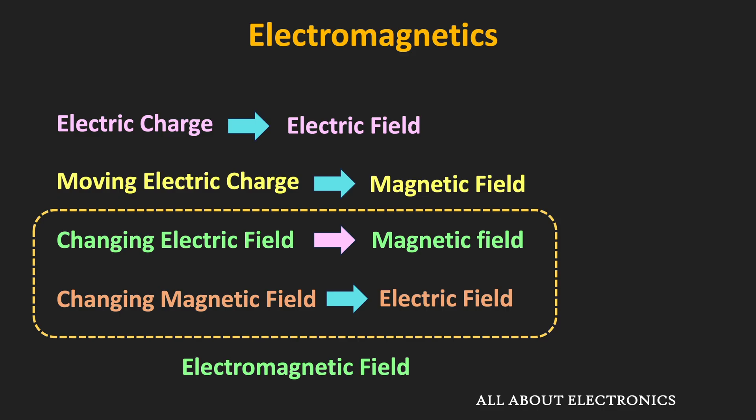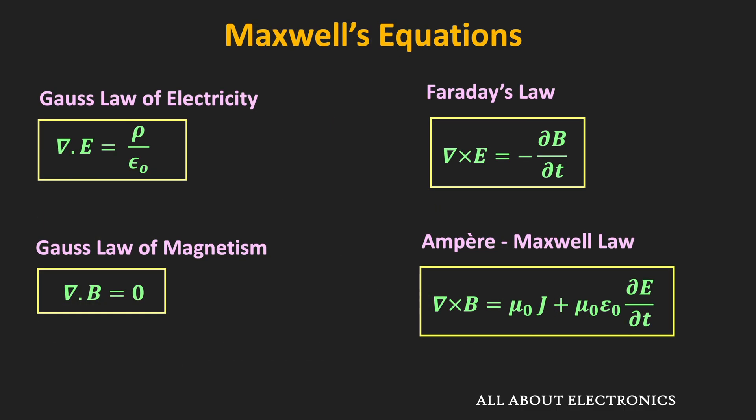This Electromagnetic field propagates through space like a wave. During the course, we will learn all of that. But all these phenomena can be best described by the four Maxwell equations. To understand them properly, we should have knowledge of these mathematical operators, or vector operators, beforehand.